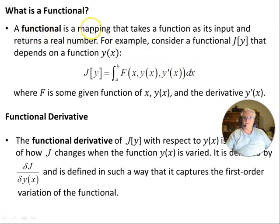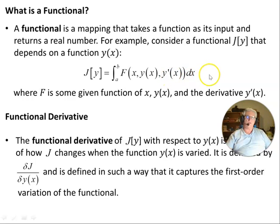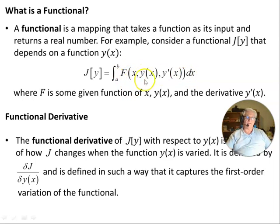So what is a functional? A functional is a mapping that takes a function as its input and returns a real number. For example, consider a functional J[y] that depends on a function y(x). J[y] is defined as the integral from a to b of f, where f is some given function of x, y(x), and the derivative y'(x). This integral will return a number when evaluated over those terminals with respect to x.